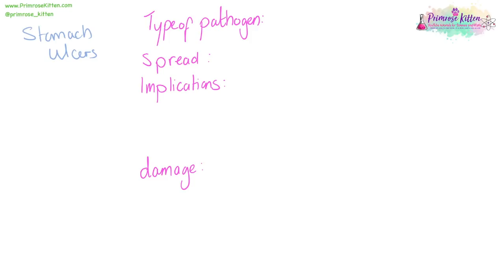Stomach ulcers were previously thought to be the result of stressful living, eating rich food, and having too much alcohol — thought to be a lifestyle disease that overweight people with very stressful jobs got. This continued until Barry Marshall proved that it wasn't. He thought — and he was right — that stomach ulcers were caused by bacteria, but nobody believed him because the dominant idea was stress and diet.